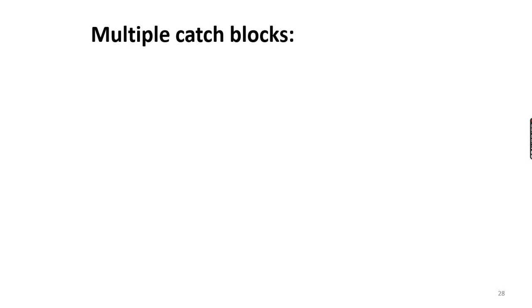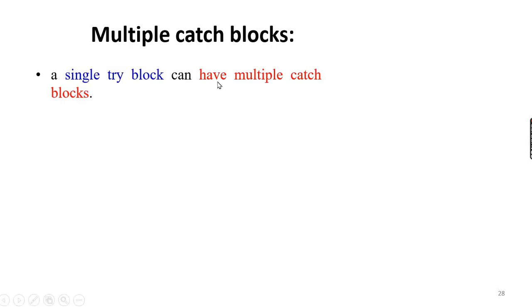What is multiple catch blocks? A single try-block can have multiple catch blocks. This exception handling mechanism is called multiple catch blocks. If you have multiple catch blocks, you can use them to handle different types of exceptions.